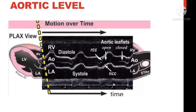Different assessments can be done at different levels in short axis. At the level of the aortic valve, you can assess the valve in systole and diastole. During systole it opens and appears almost triangular, and during diastole it closes. The right coronary cusp and non-coronary cusp are visible.